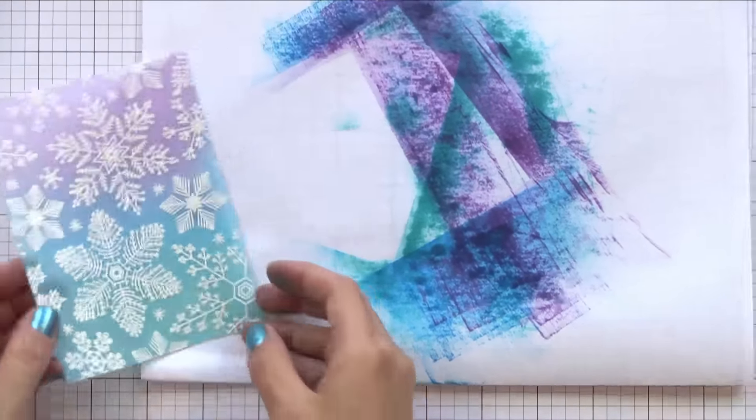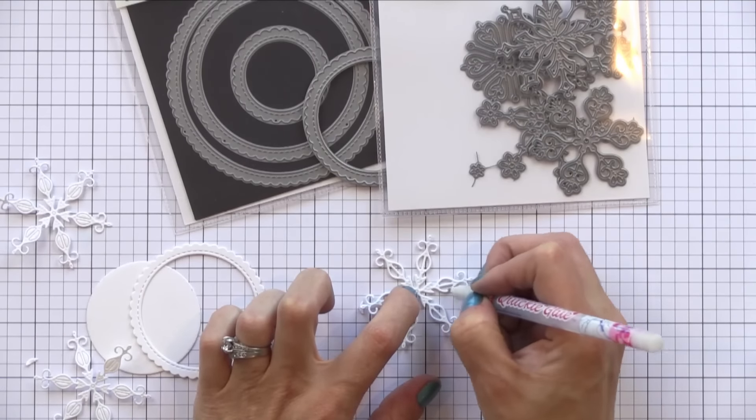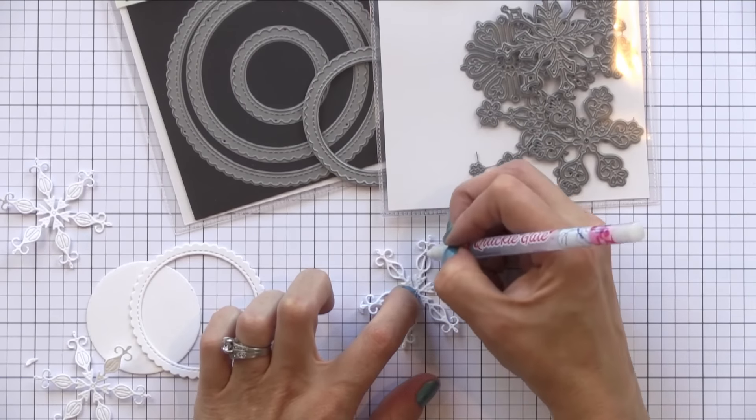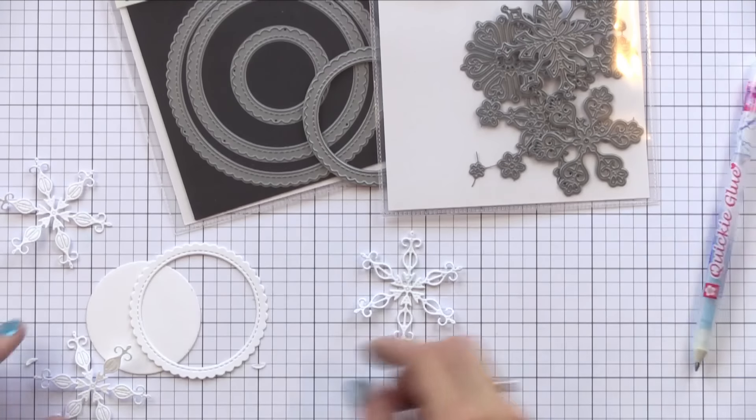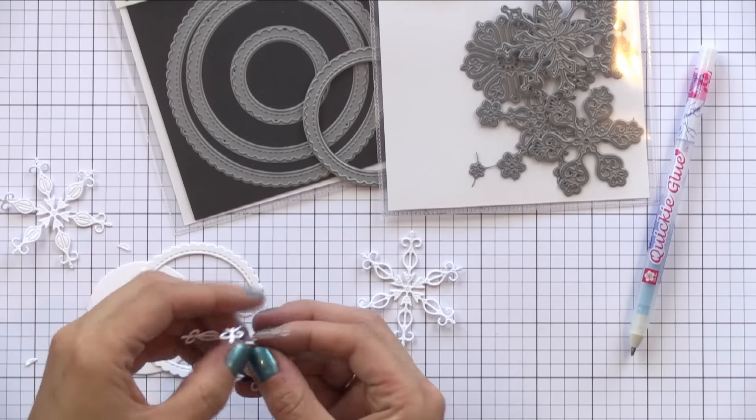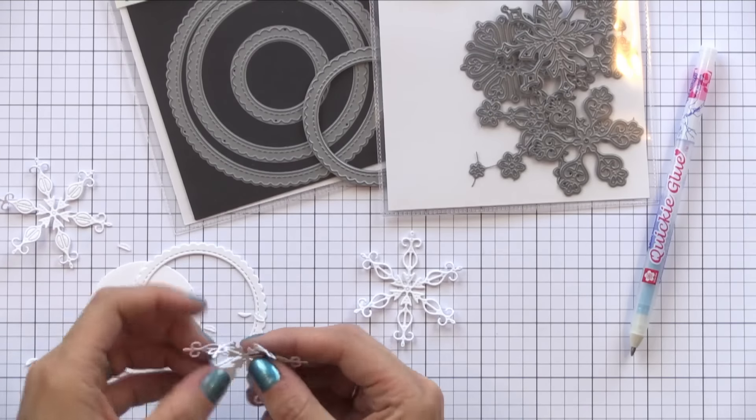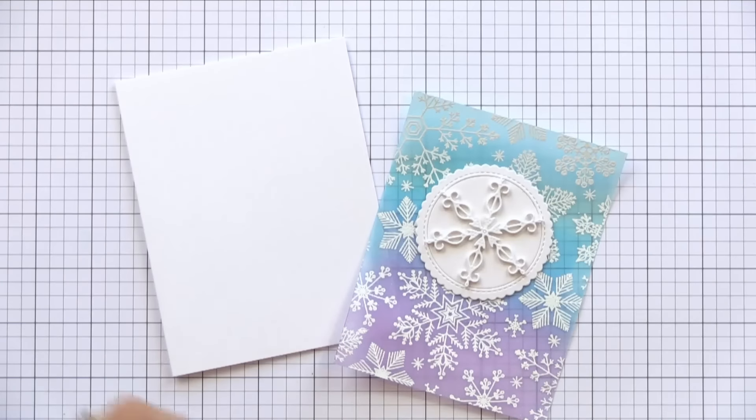So now I need to attach this to the front of the card and to be honest with you, I've never really found an adhesive that I like on vellum. I feel like it always shows through. So I'm going to show you the trick that I use for attaching vellum. I have different die cuts here. I'm actually layering some My Favorite Things snowflake die cuts on top of each other so that they have a nice dimension to it. Looks like an embellishment.